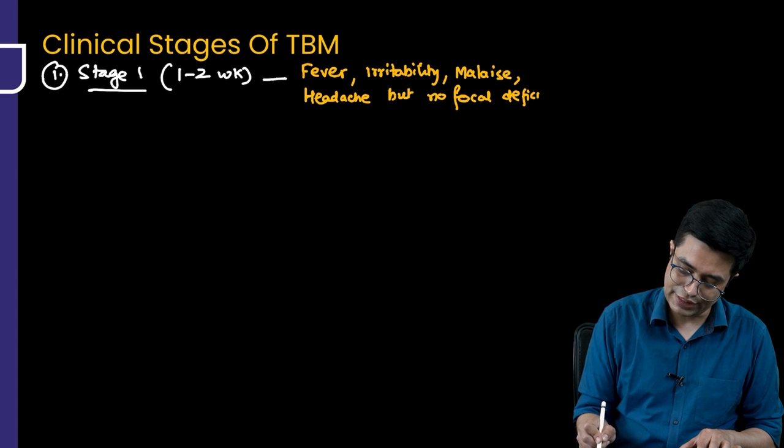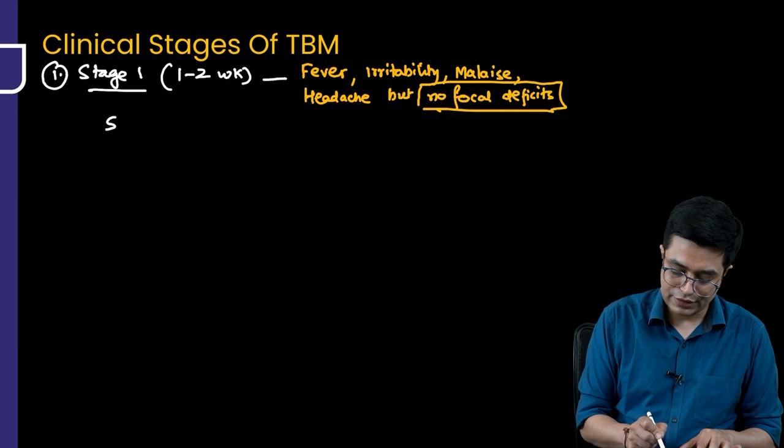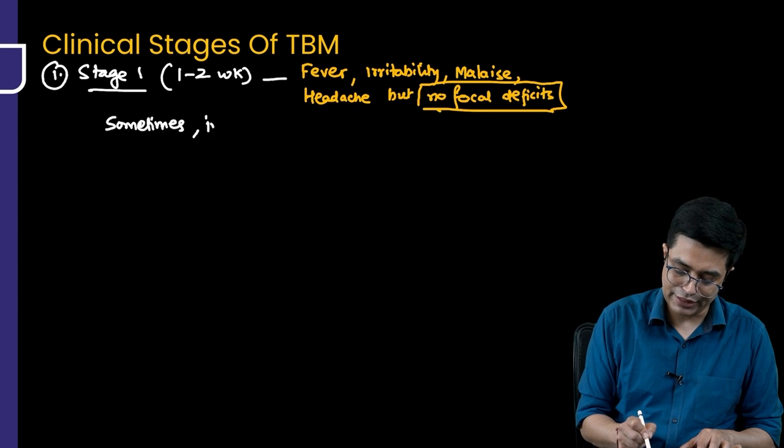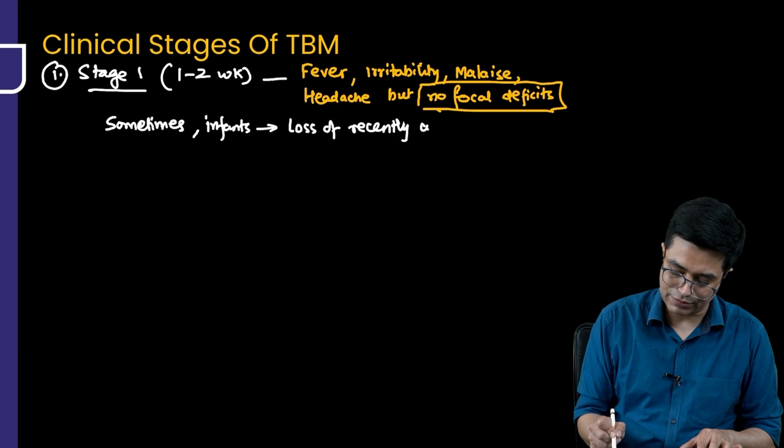Focal neurological deficits are classically absent, so no focal deficits are seen. Sometimes, if tubercle meningitis is happening in infants, you will find that there is a loss of recently acquired milestones in some of these patients.